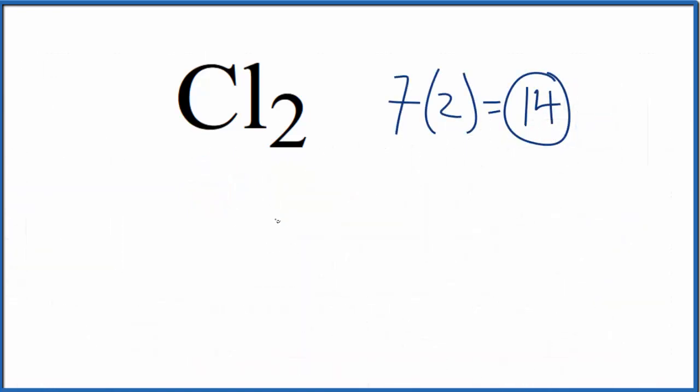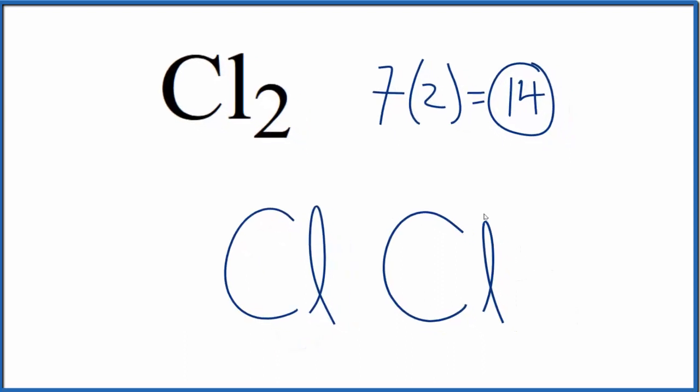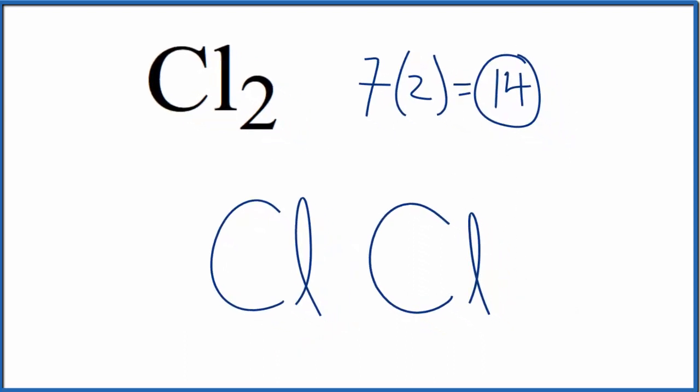We have two chlorine atoms, so we'll just write the element symbol for chlorine twice. That's Cl. Then we have 14 valence electrons. Let's put two between the chlorine atoms. That forms the chemical bond.